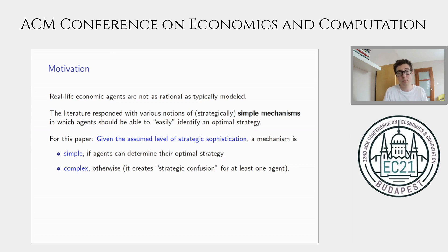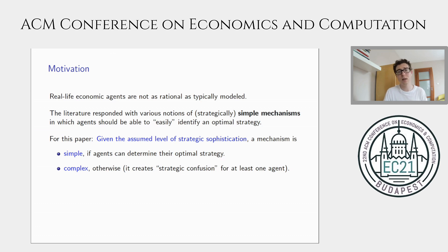Roughly speaking, by simplicity we're going to understand the following property of a mechanism. We're going to make an assumption about the level of sophistication of the agents, and we're going to call a mechanism simple if agents can determine their optimal strategy in the mechanism. Otherwise, we're going to call a mechanism complex. So in a complex mechanism, by definition, at least one agent is going to be strategically confused, which means that agent cannot select an optimal strategy, or at least the designer is unable to predict how the agent will behave based on that assumption about the agent's rationality.